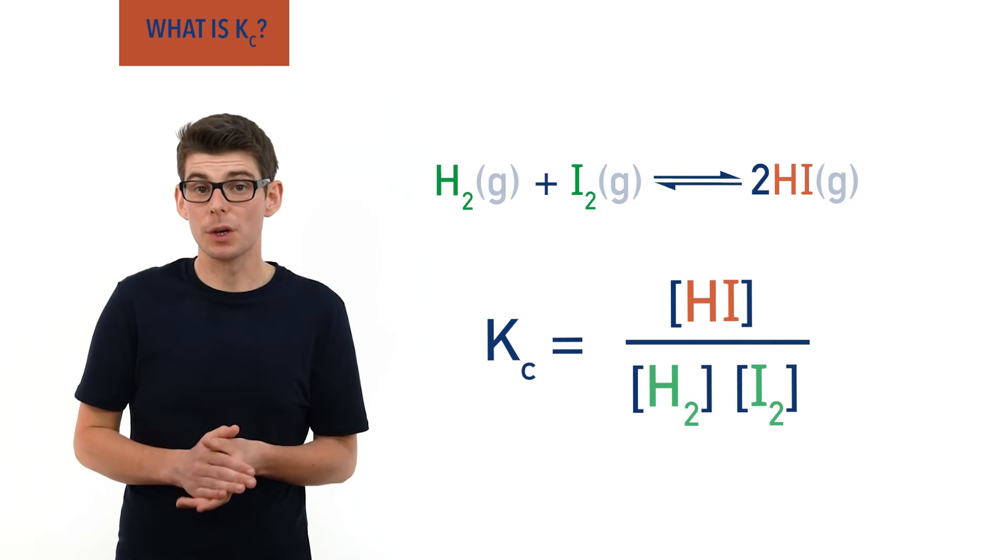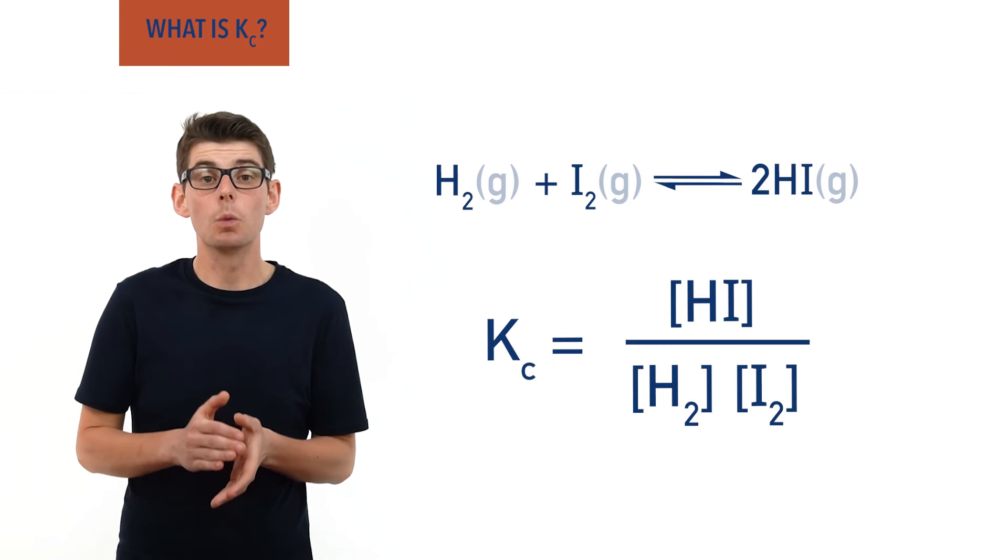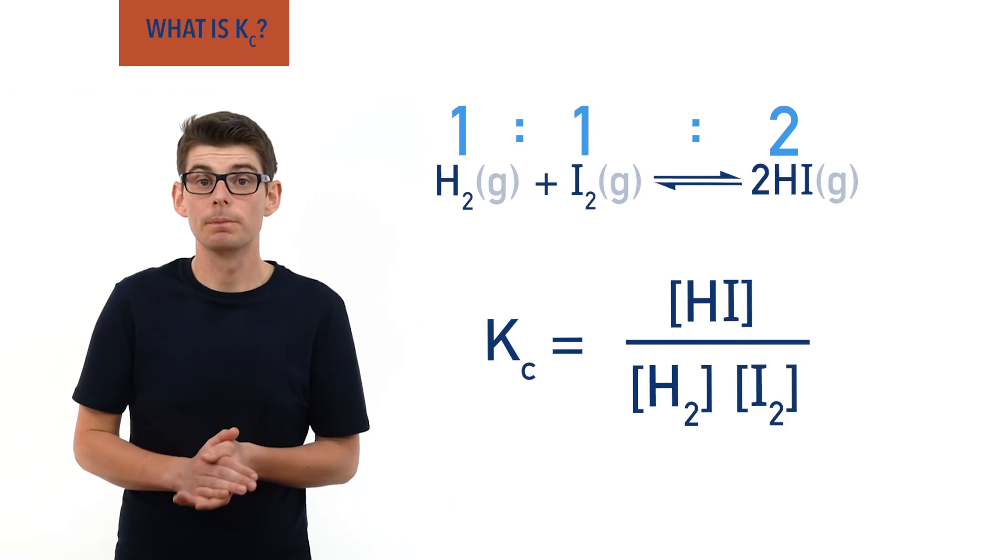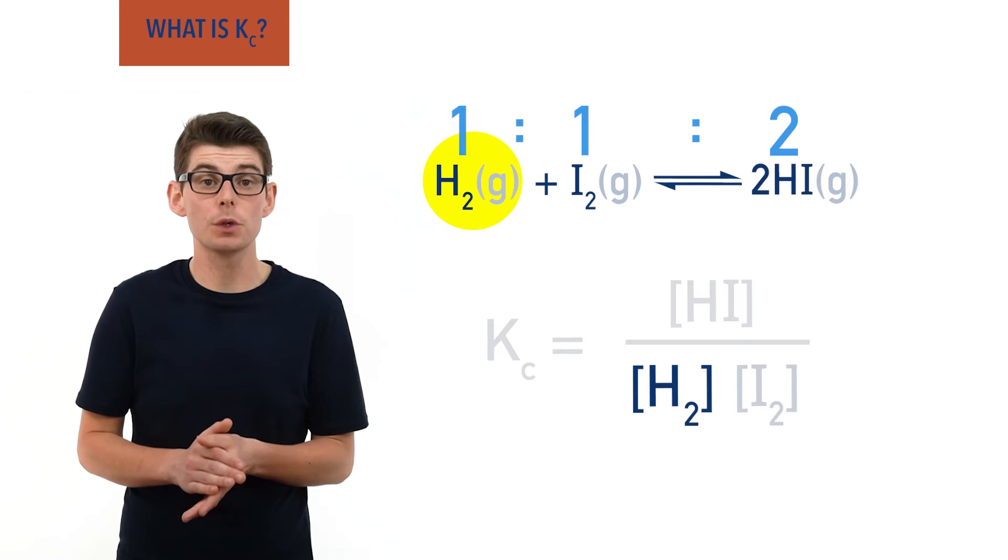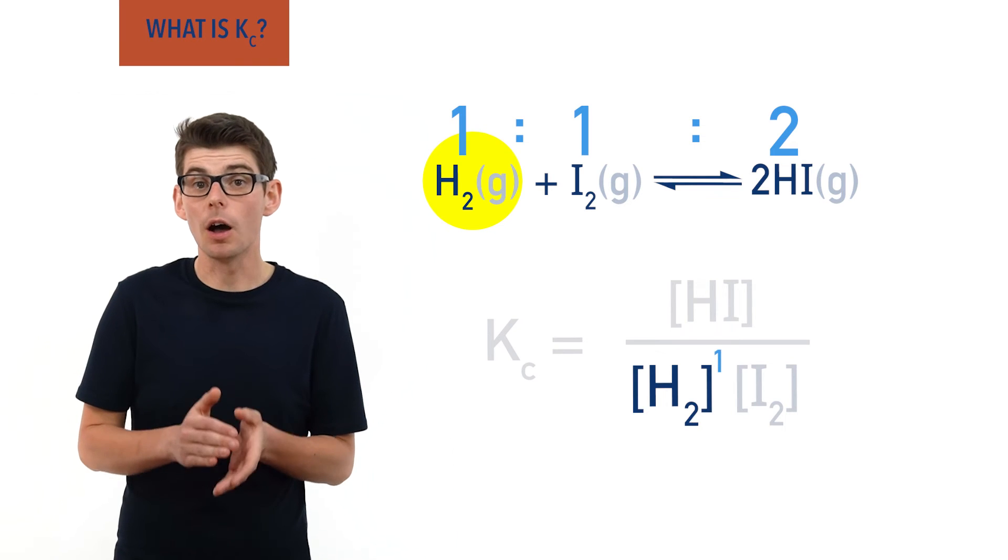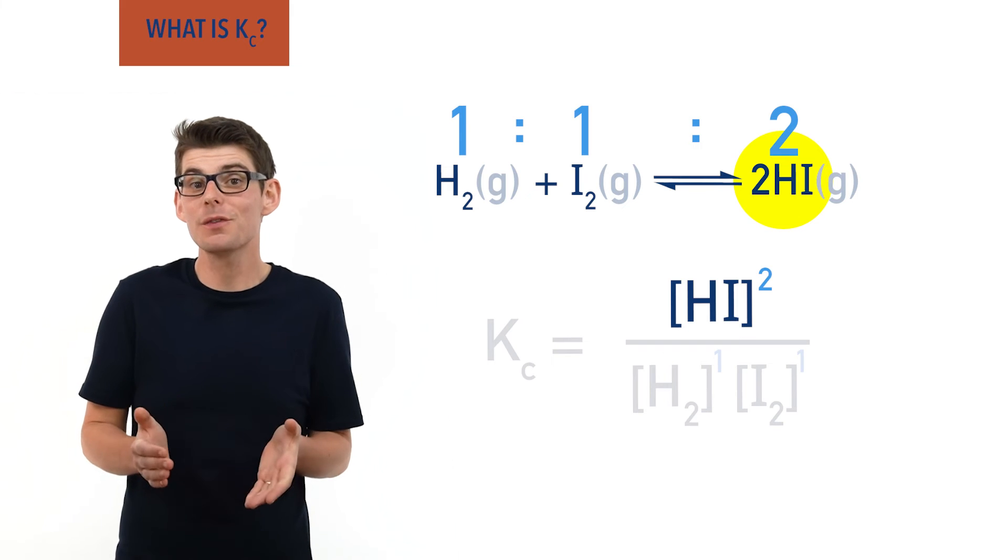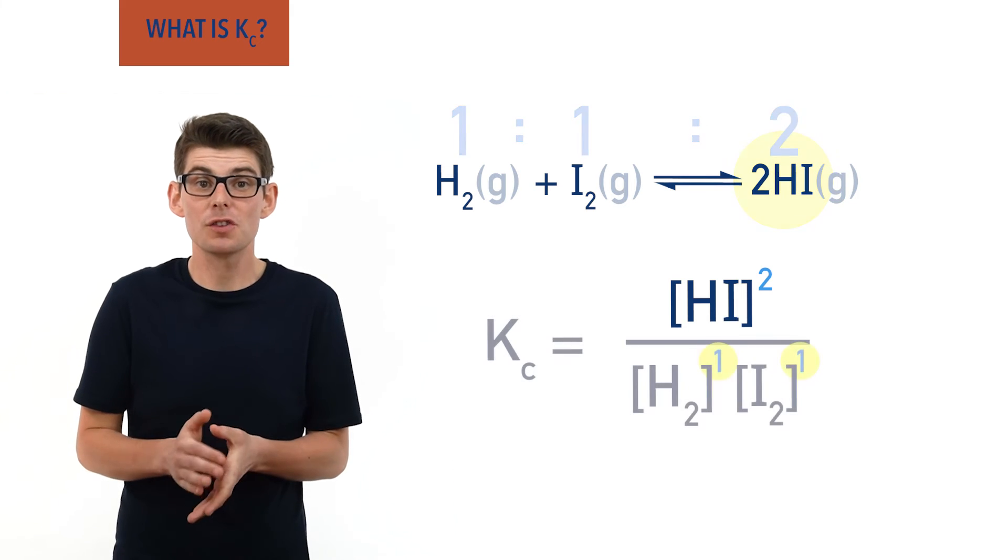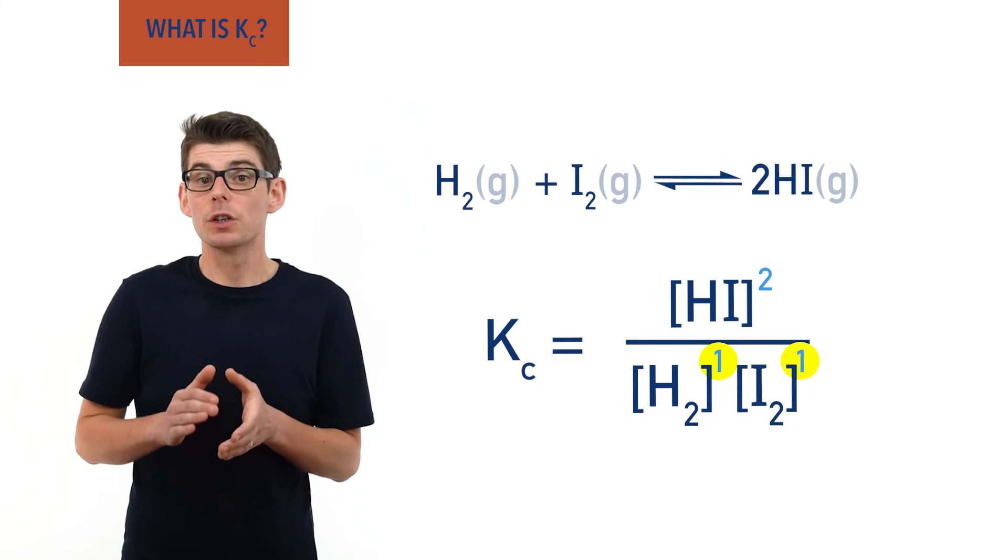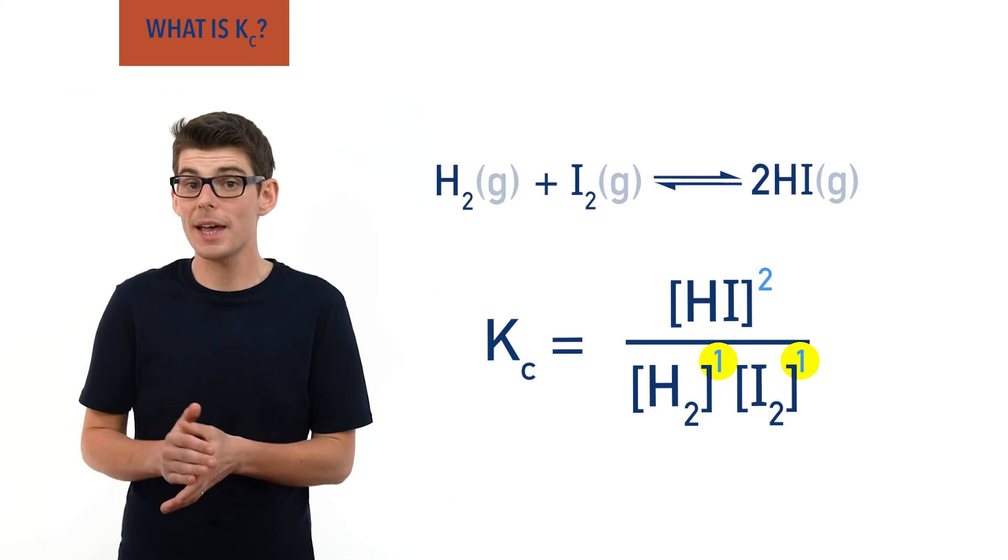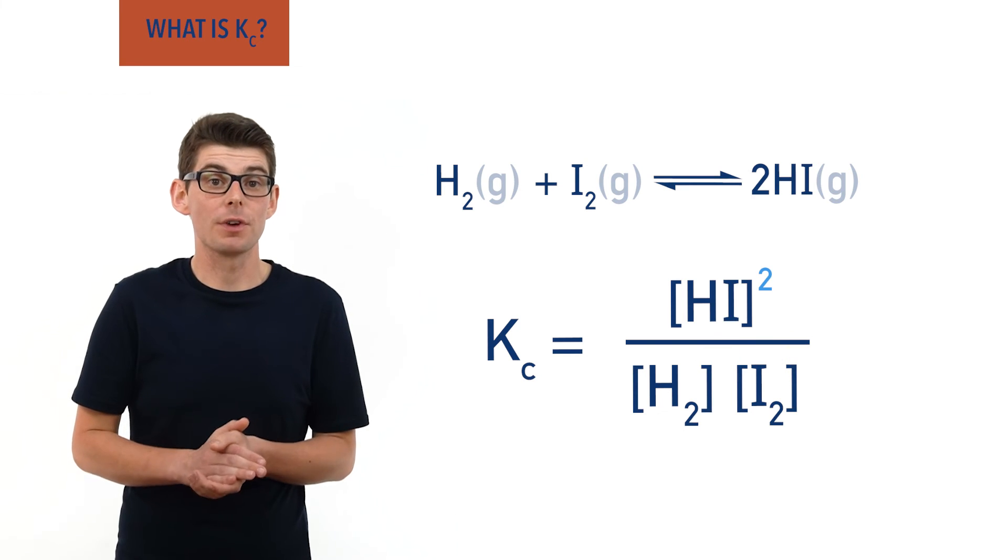The molar ratios or coefficients for the reaction of H2, I2 and HI are 1 to 1 to 2, meaning in the expression we raise the concentration of H2 to the power 1, I2 to the power 1 and HI to the power 2. Anything raised to the power 1 just means the same value, meaning we can simplify this down to concentration of HI squared divided by concentration of H2 times by concentration of I2.